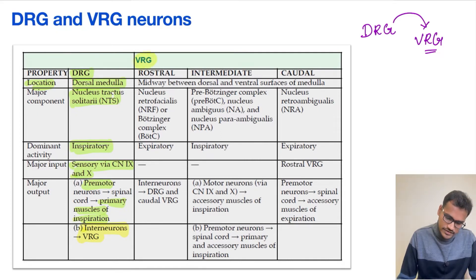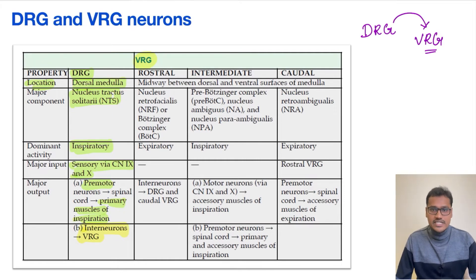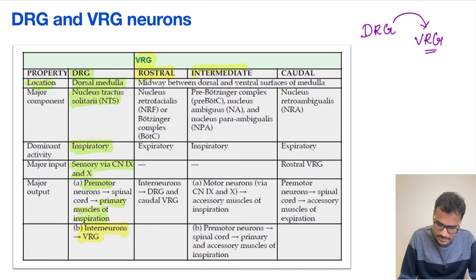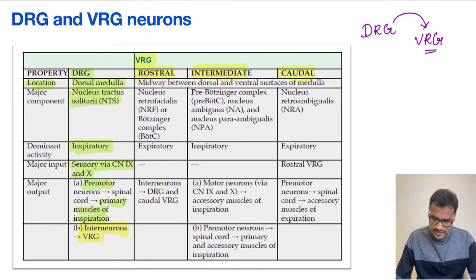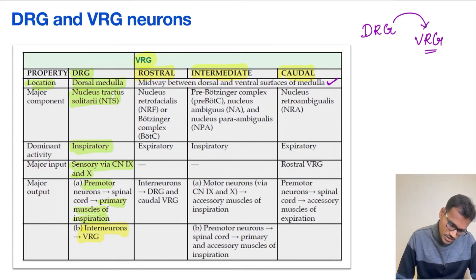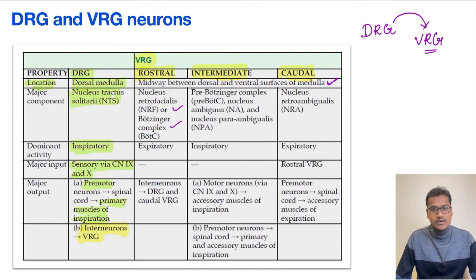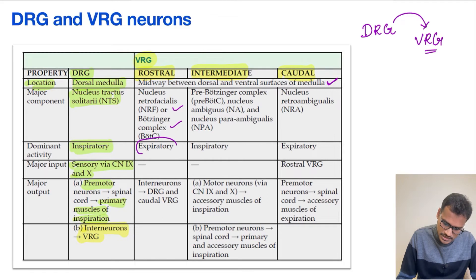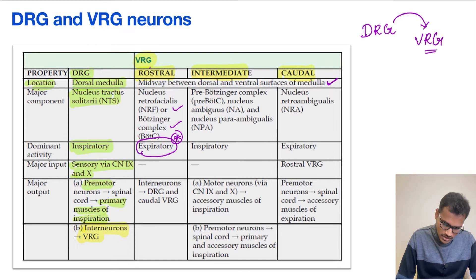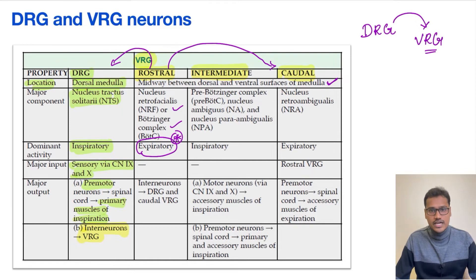Now coming to the VRG neurons. In the VRG there are three divisions: the rostral VRG, intermediate VRG, and caudal VRG. This VRG is located between the dorsal and ventral surface of the medulla. The major component of the rostral VRG includes a nucleus called nucleus retrofacialis and the Bötzinger complex. Its major function is expiratory, and it sends neurons back to the DRG as well as to the caudal respiratory group of the VRG.